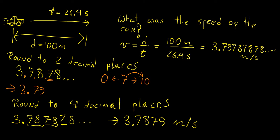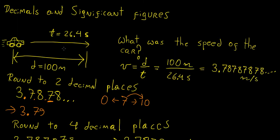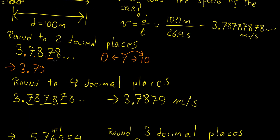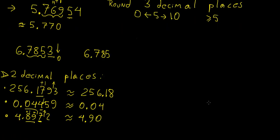Hopefully these examples have shown you what rounding is all about and why we need it. In many practical applications we end up with extremely large or repeating numbers, so we need to decide how many digits to retain in an answer so that it remains accurate and correctly captures what is happening, without having to write down an endless expression. In the next video we'll continue with more examples on decimals and significant figures.